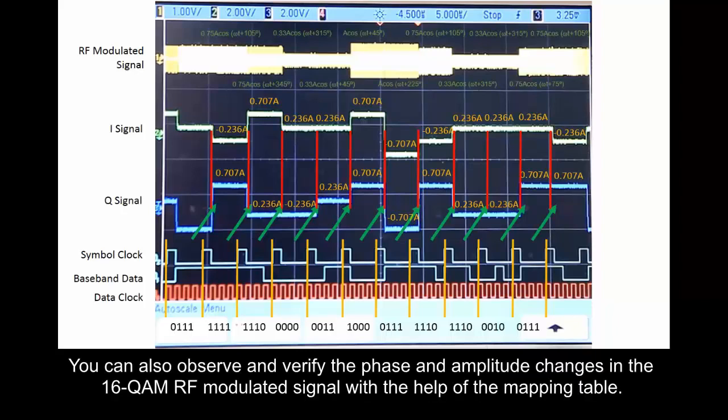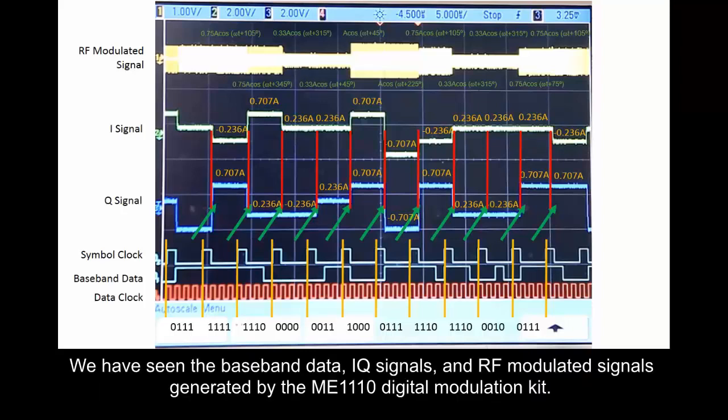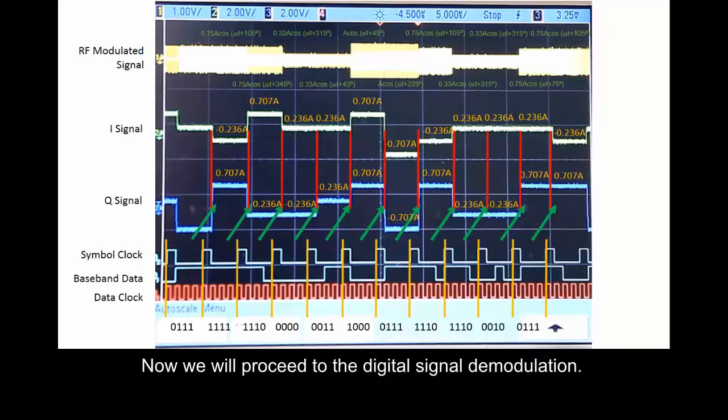You can also observe and verify the phase and amplitude changes in the 16QAM RF modulated signal with the help of the mapping table. We have seen the baseband data, IQ signals, and RF modulated signals generated by the ME1110 digital modulation kit. Now we will proceed to the digital signal demodulation.